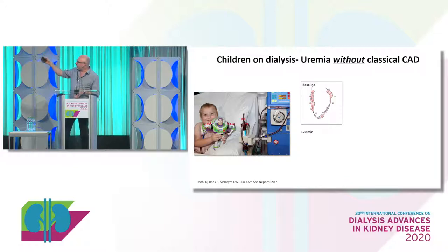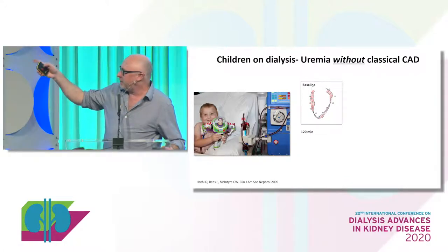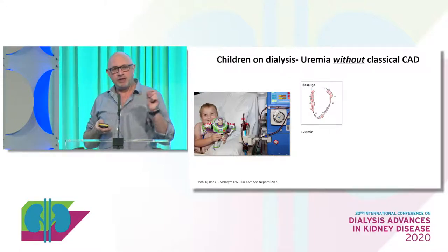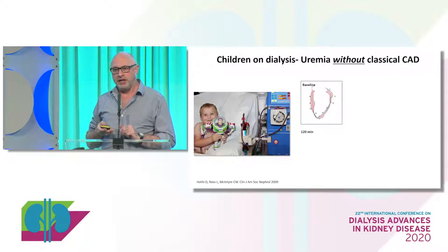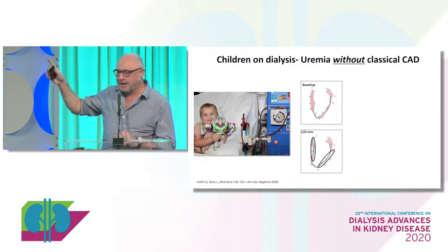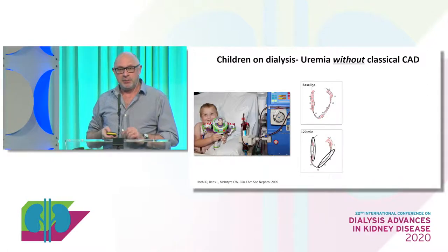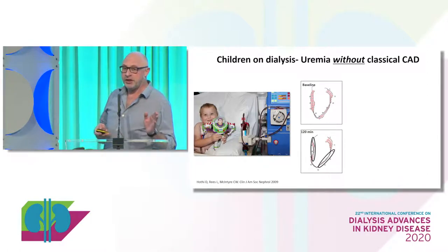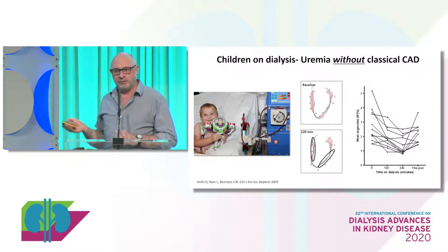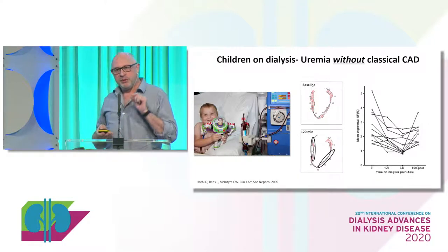This is a scan from a four-year-old. What you see here is the left ventricle, but those lines show how much that bit of heart moved over an average of three cardiac cycles. After only two hours of dialysis, large akinetic areas are appearing. The youngest we studied was two, the oldest was 14, and all of them stunned. So this is a predominantly microvascular problem.